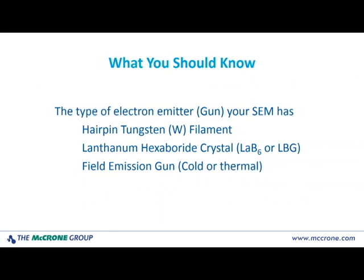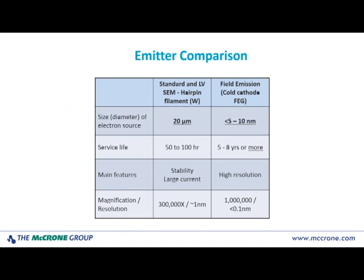You also want to find out what the electron gun or electron emitter is in your SEM. Many of them are just going to be the hairpin tungsten filament — just a tungsten wire about 120 micrometers in diameter. You also have a lanthanum hexaboride crystal, which is referred to as LaB6. You have your field emission guns, which could be the cold or the thermal variety — just a very fine sharp tip tungsten needle. So just a quick comparison of two types of emitters: the hairpin tungsten filament and the field emission guns. Your LaB6 kind of falls in the middle of these two.